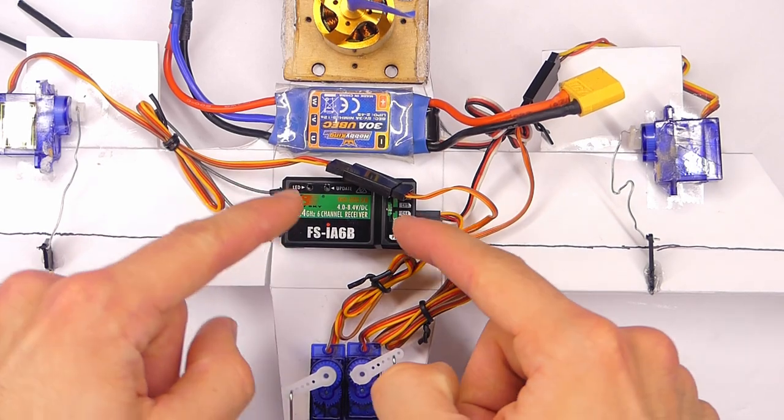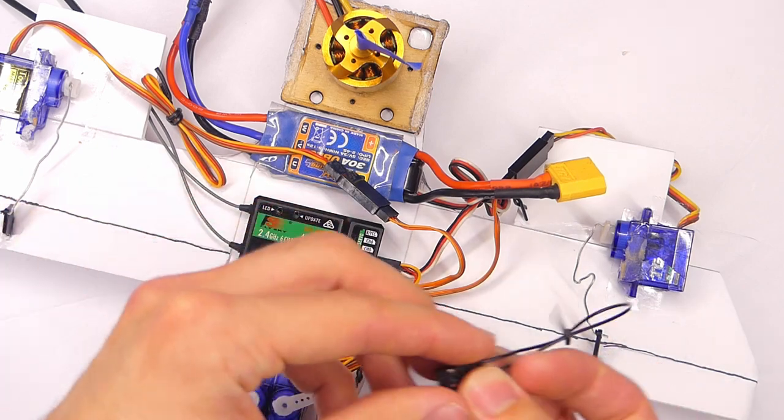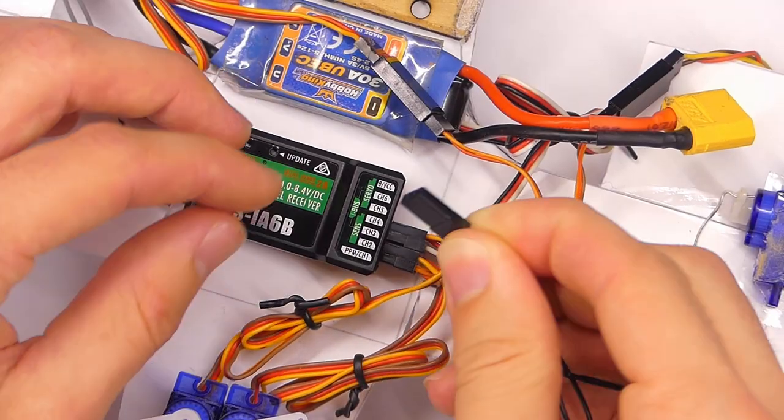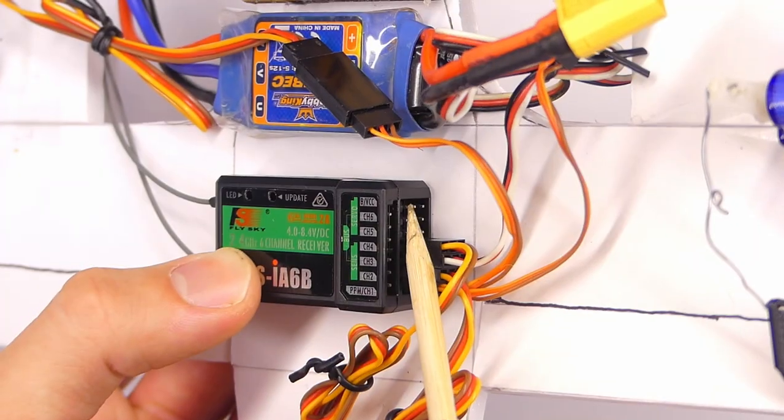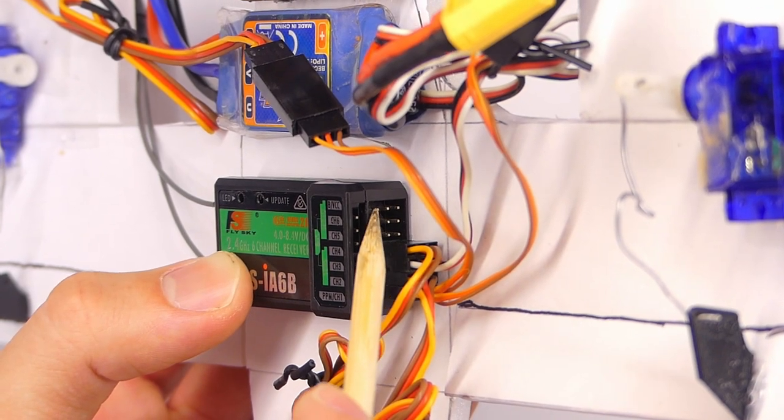Step one: have your receiver connected to your ESC, your electronic speed controller. Take your bind plug or bind key and plug it into the port that says BVCC. It's going to be this top section right there, and you're only going to be touching the top pin and the bottom pin, not the middle pin.